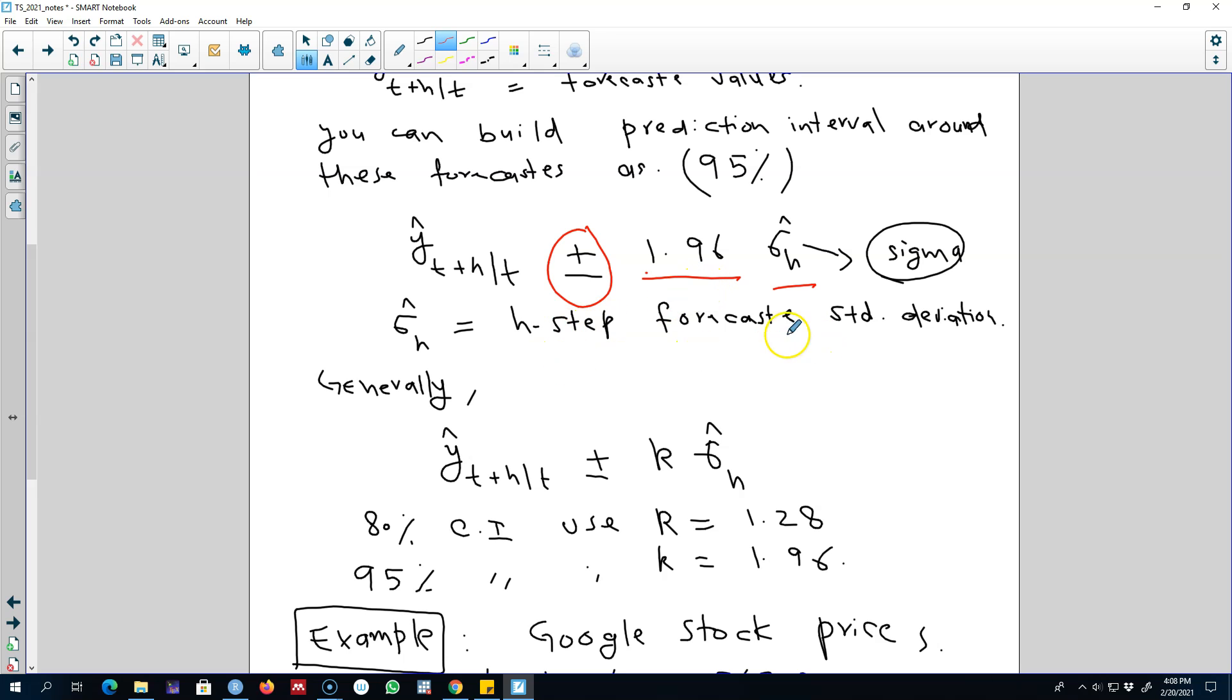This sigma hat is the h-step forecast standard deviation that we generally calculate while calculating our forecasting values. So our forecast for each period ahead, given the information that we have until time t, will add plus minus K sigma hat to this value to get a prediction interval.